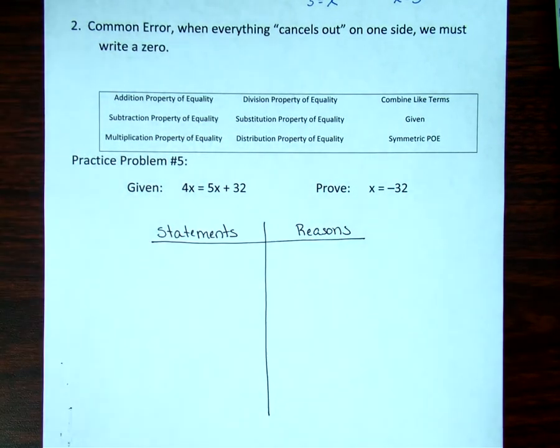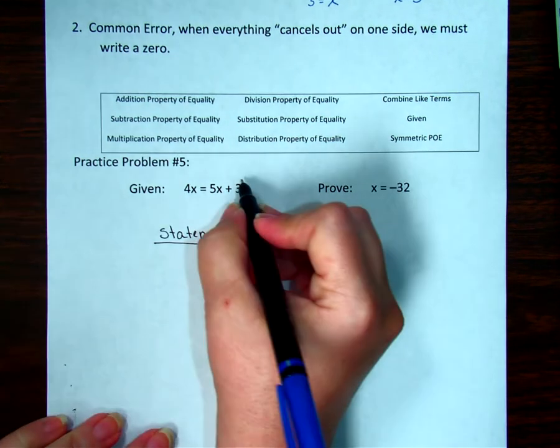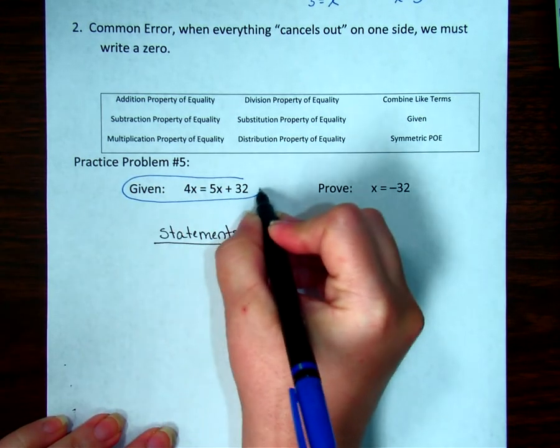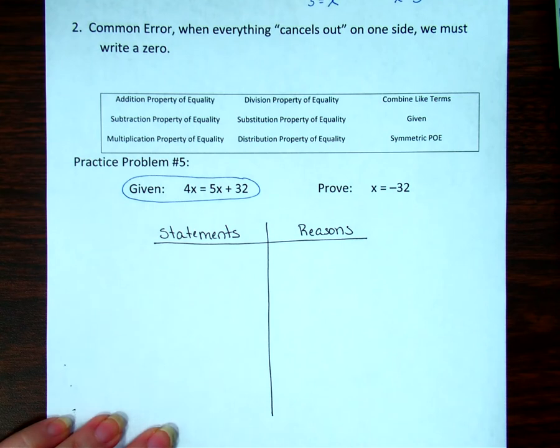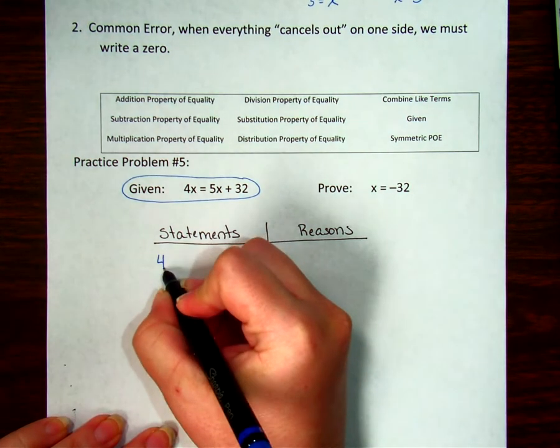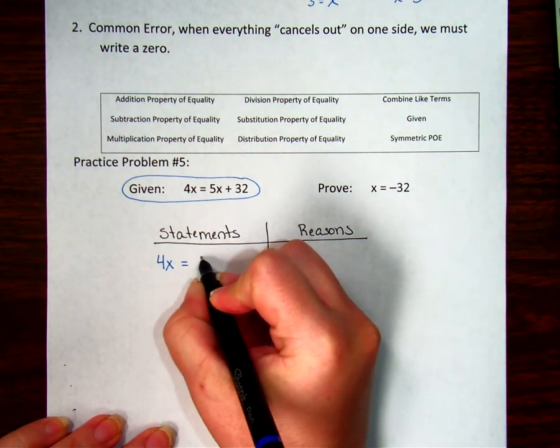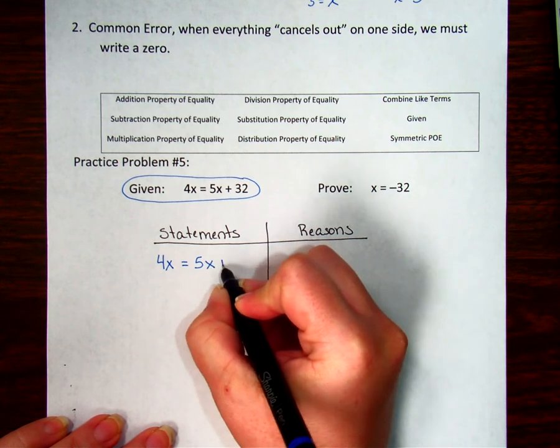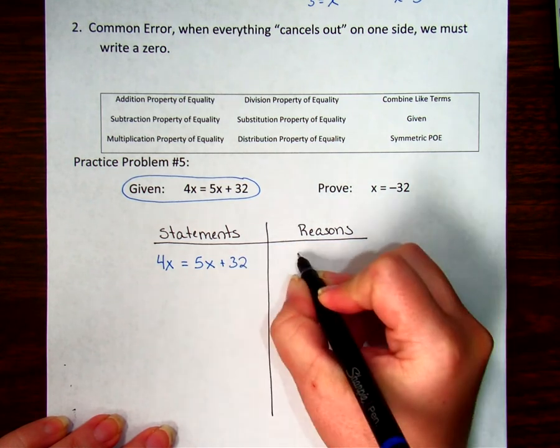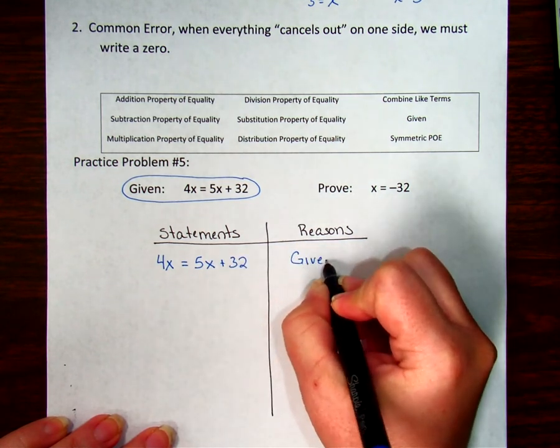So then I'm going to start with my first given, and my only given in this instance. Given 4X equals 5X plus 32. And that was given to me.